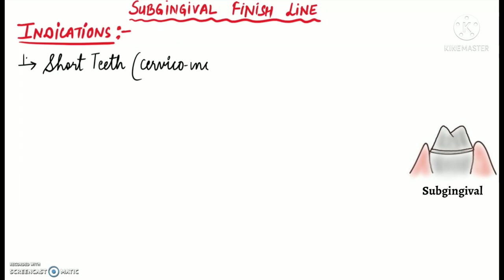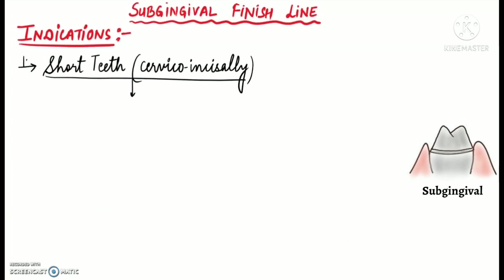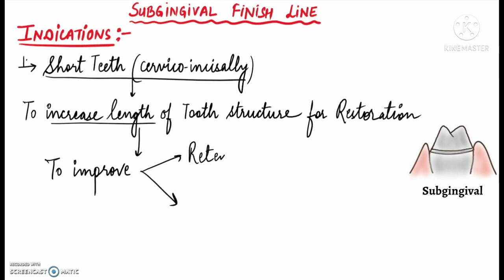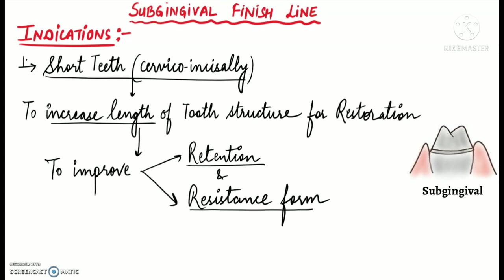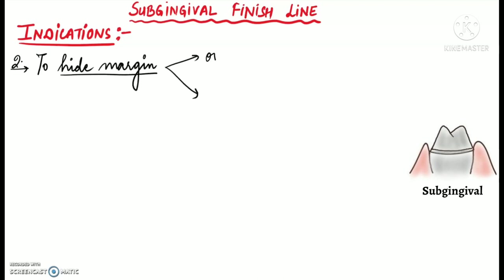Sub-gingival placement of restoration margins is considered when restoring teeth that are short cervico-incisally and there is a need to increase the amount or length of tooth structure for the restoration — this is done to improve the retention form and resistance form. Another indication is when we want to hide the margins on a discolored tooth or to hide the margin when a more opaque restoration is placed.